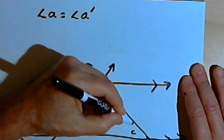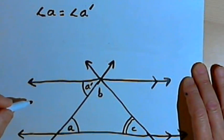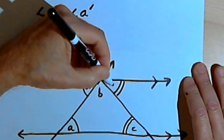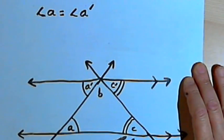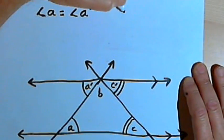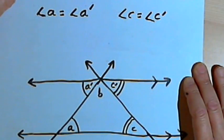And for angle C, the alternate interior angle would be up at the top next to B. We'll call that C prime. And angle C and angle C prime are also equal. So angle C equals angle C prime.